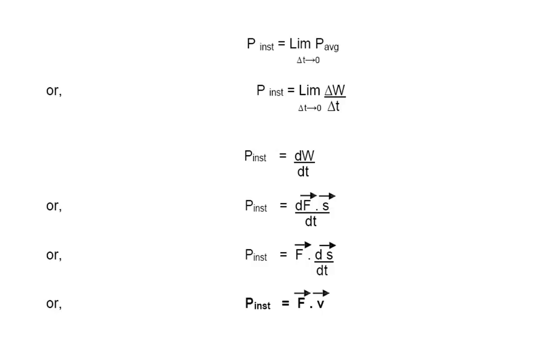...you will get F⃗ dot, because the force is constant and the distance is changing, so ds/dt. Ultimately, the instantaneous power will be equal to F⃗·v⃗.